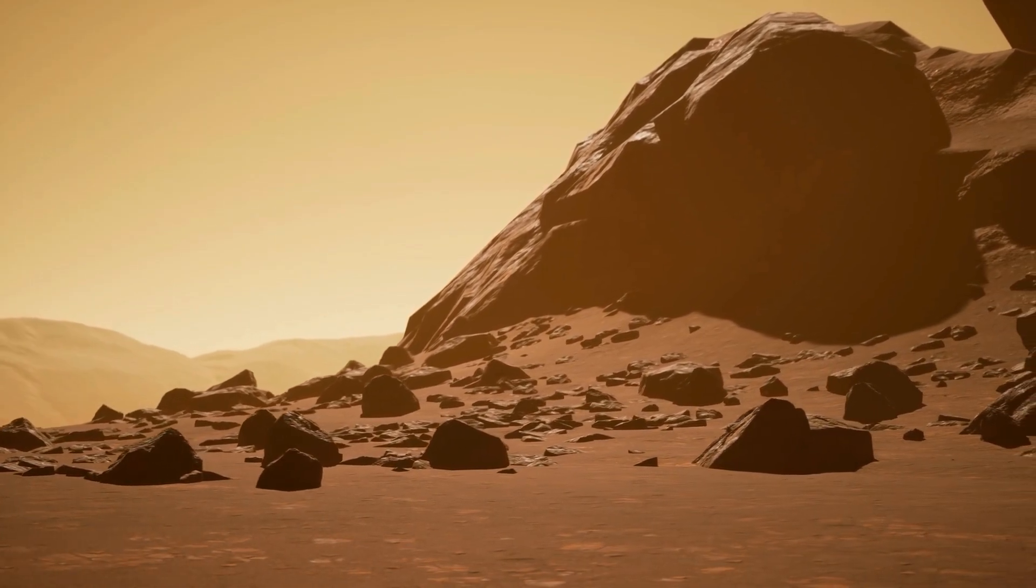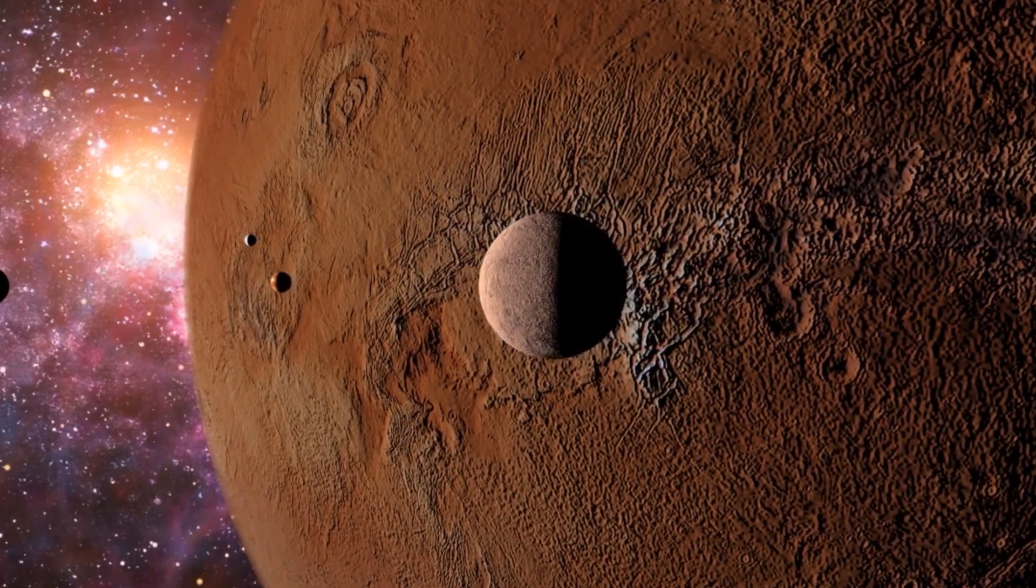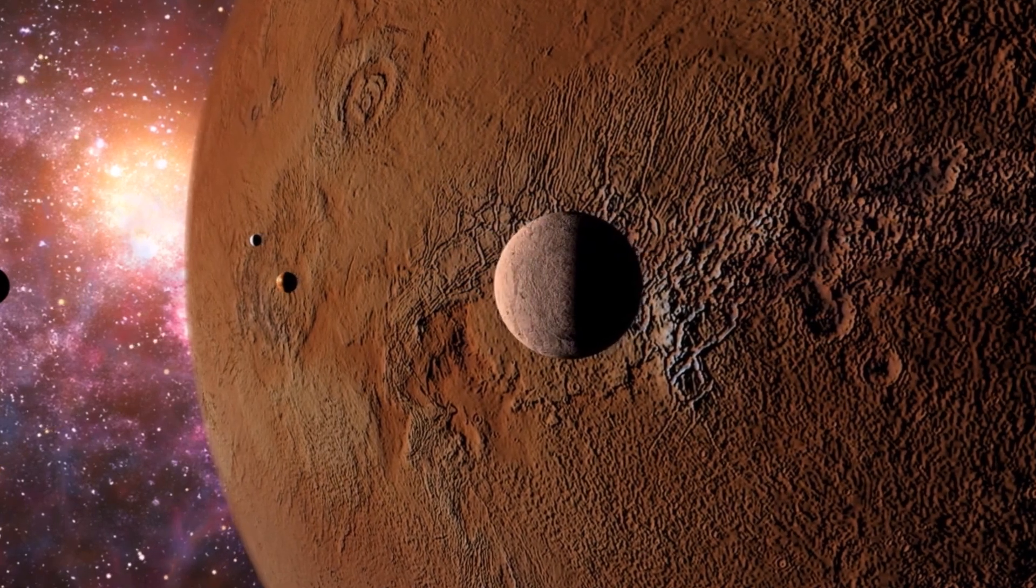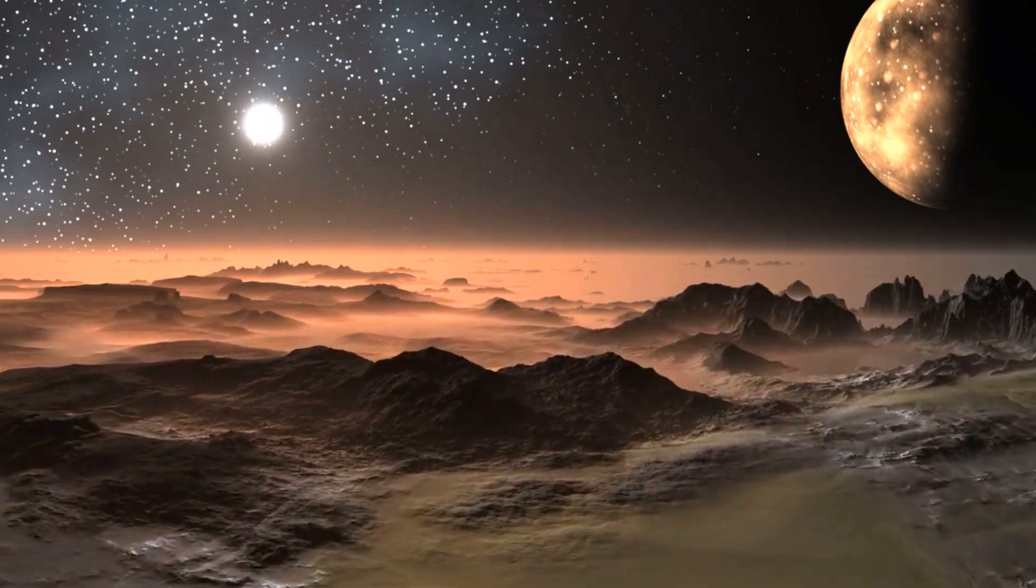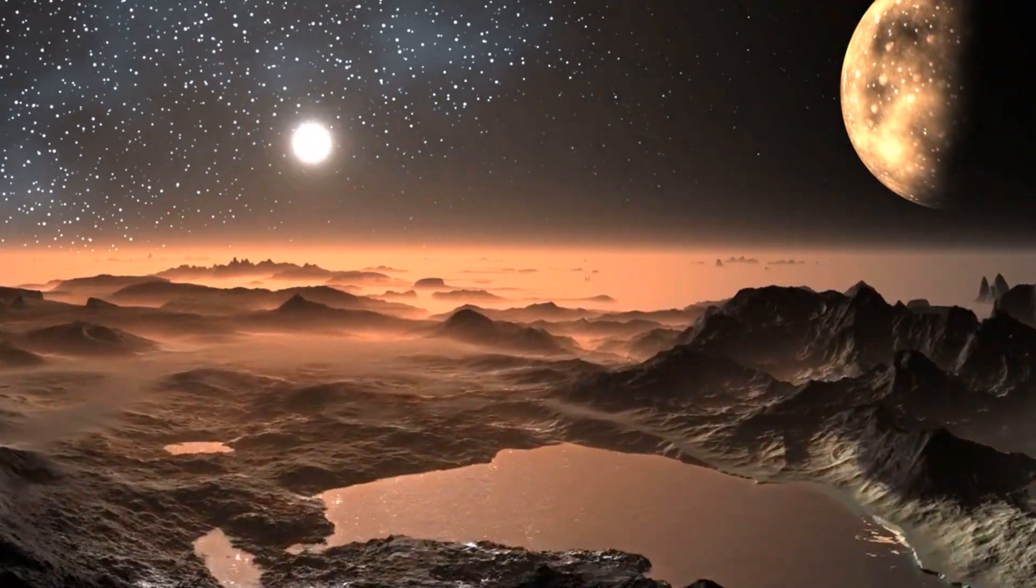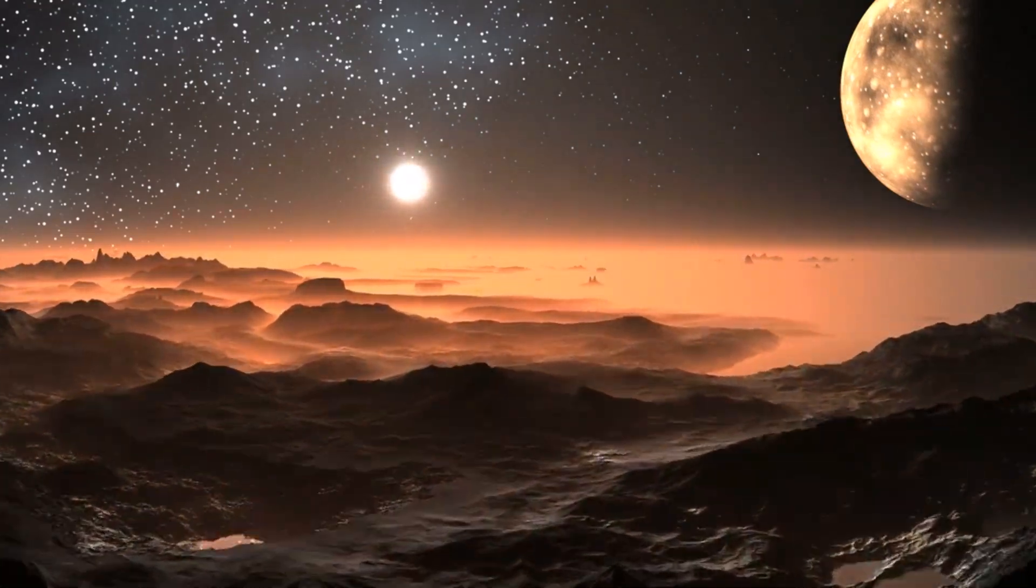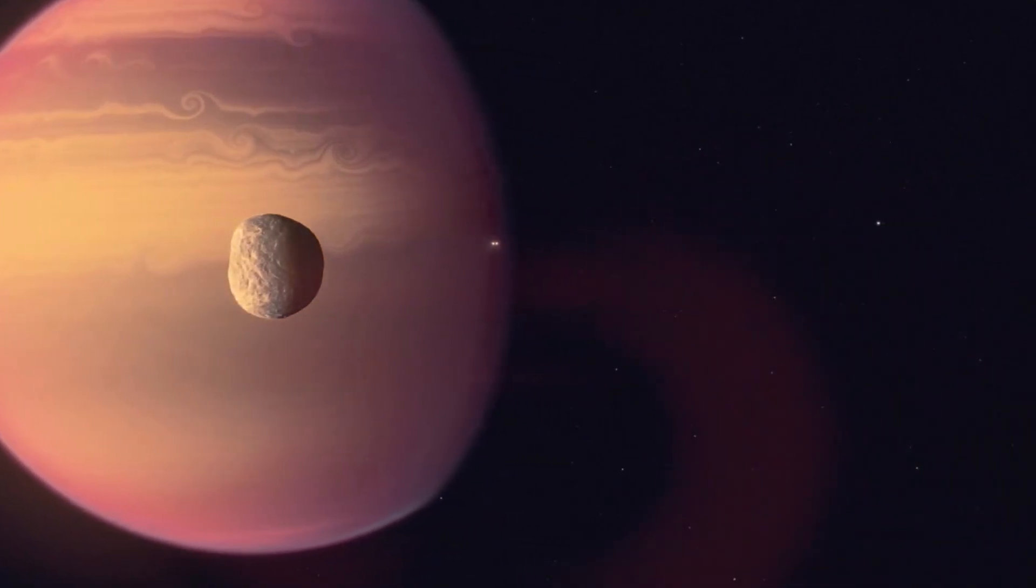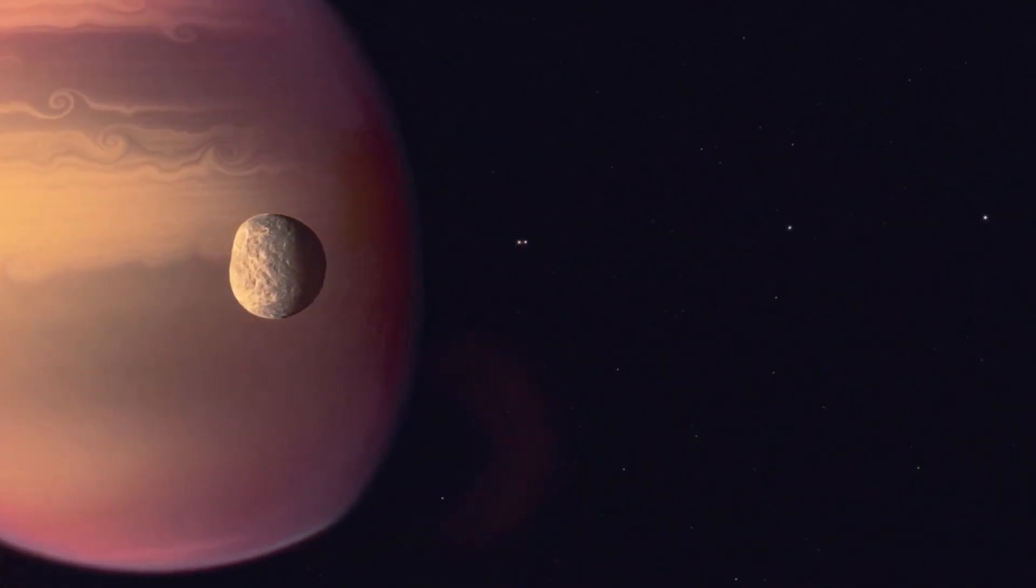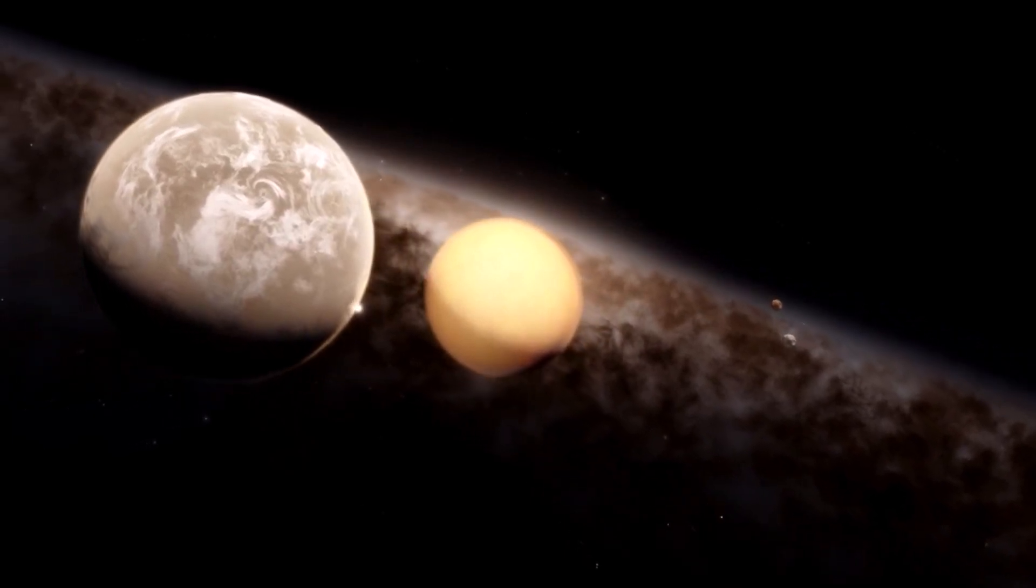Proxima b is almost certainly tidally locked. One hemisphere in eternal day, the other in endless night. The dark side should be frozen, silent, and utterly black. Yet there was a persistent, measurable brightness standing out against the cold. Three possibilities have emerged. The most conservative explanation, atmospheric circulation. Winds could carry heat and starlight from the day side into the night, scattering enough infrared radiation for Webb to detect.